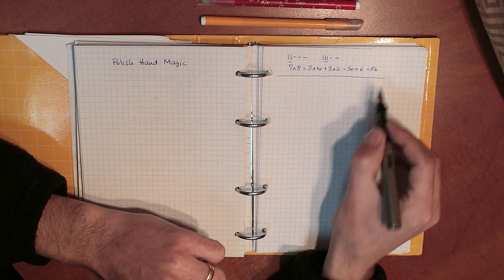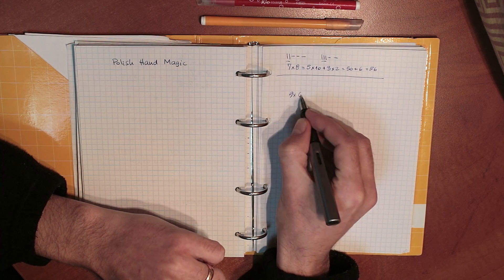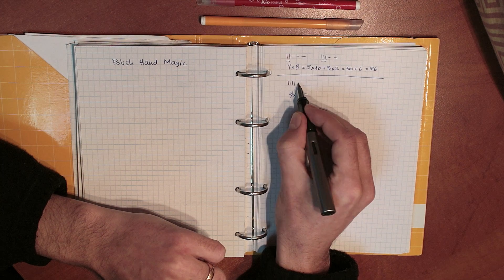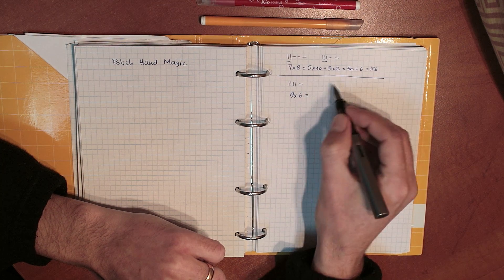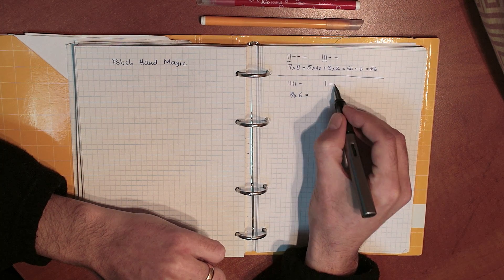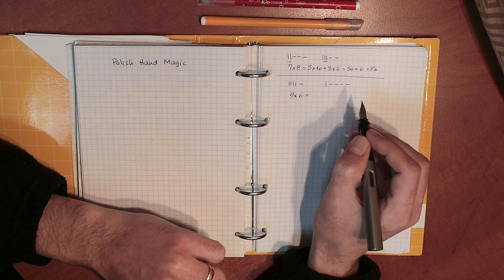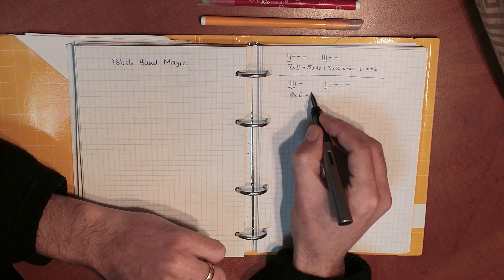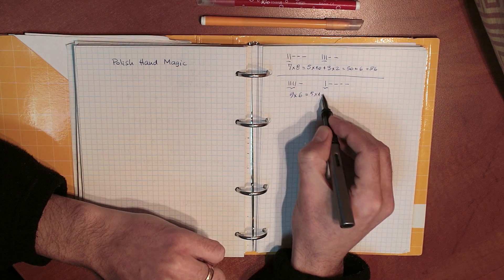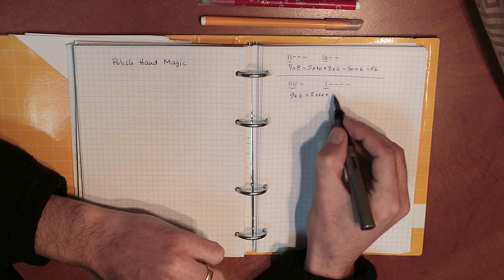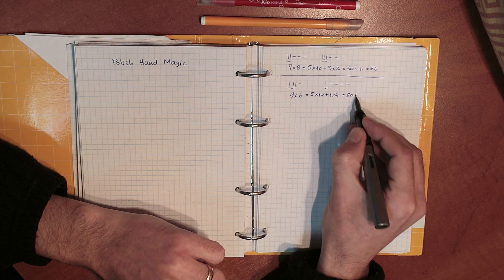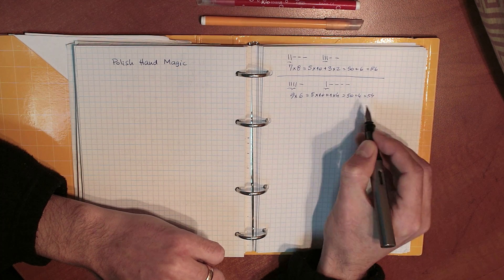Let's do one more. Let's say we want 9 times 6 this time. For the 9, I raise 1, 2, 3, 4 fingers, and 1 is lowered. And for the 6, I have 1 raised finger and 1, 2, 3, 4 lowered fingers. I count the total number of raised fingers on my two hands. So I have 5 again times 10, plus 1 times 4, right? 1 times 4. And the result is 50 plus 4, which is 54. Again, correct.